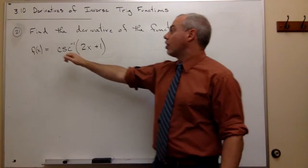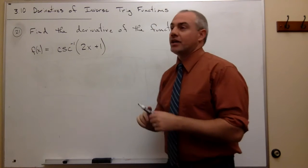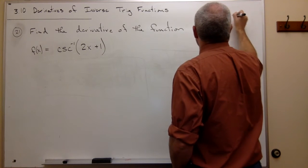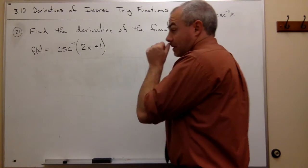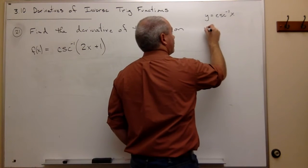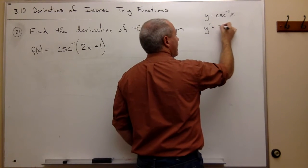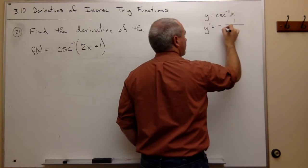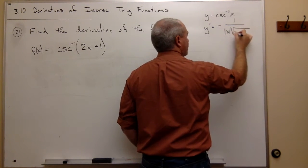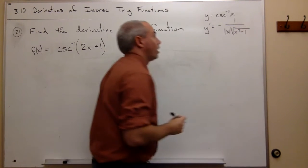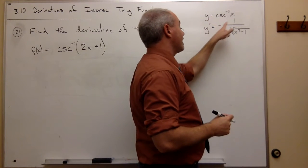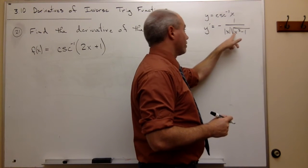The first thing we need to know when taking the derivative of cosecant inverse of something is: if we have y = cosecant inverse of x, then the derivative is y prime = negative 1 over the absolute value of x times the square root of x squared minus 1.